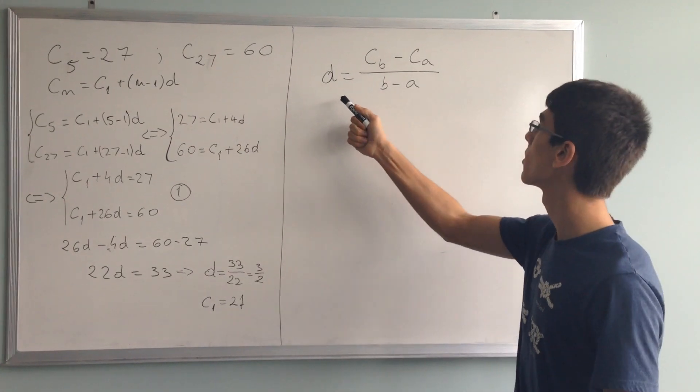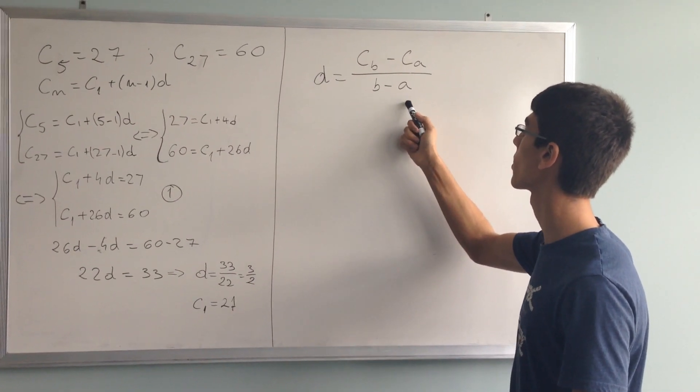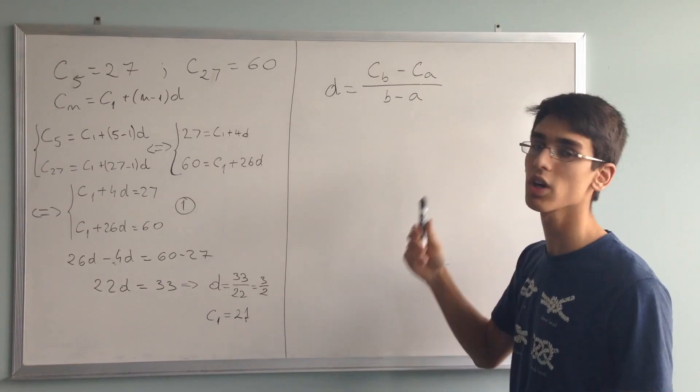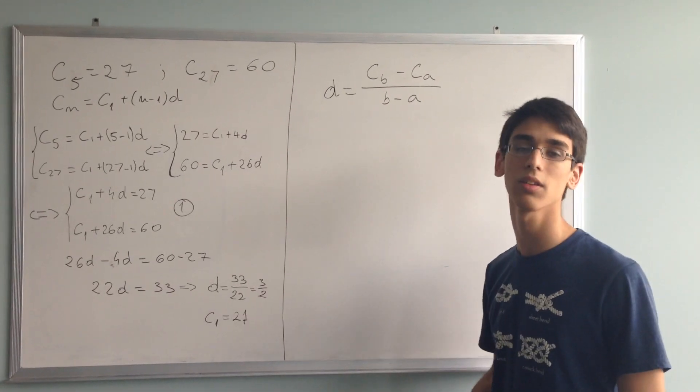Common difference D is equal to Cb minus Ca over B minus A, where Cb and Ca are two terms in an arithmetic sequence and B and A are their indexes.